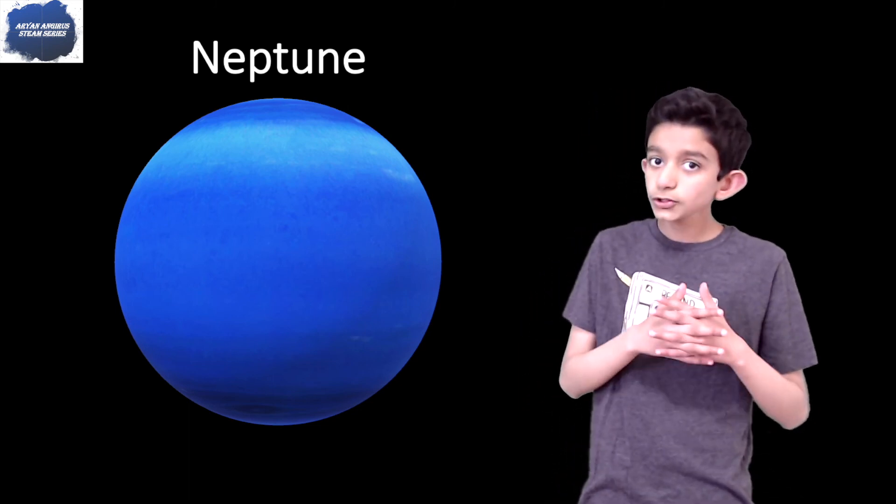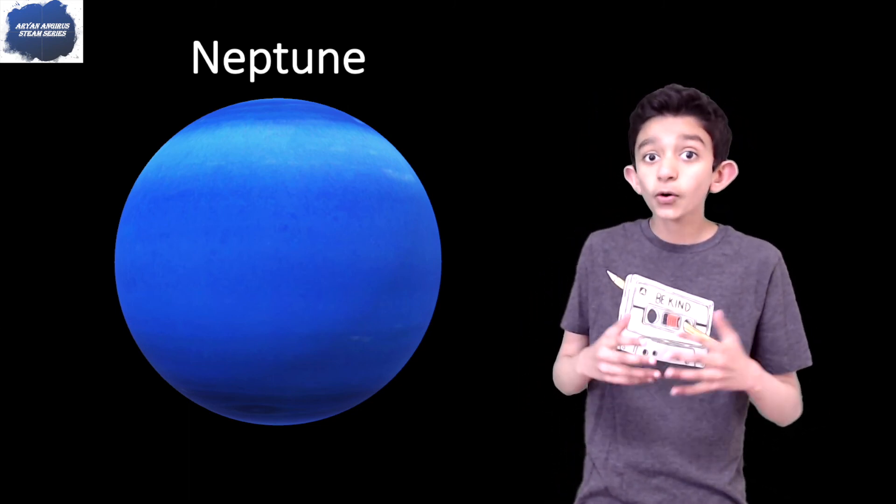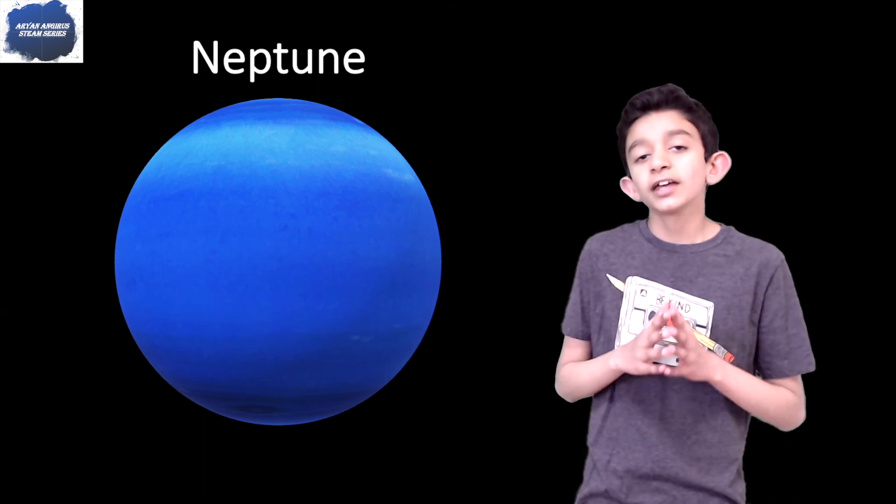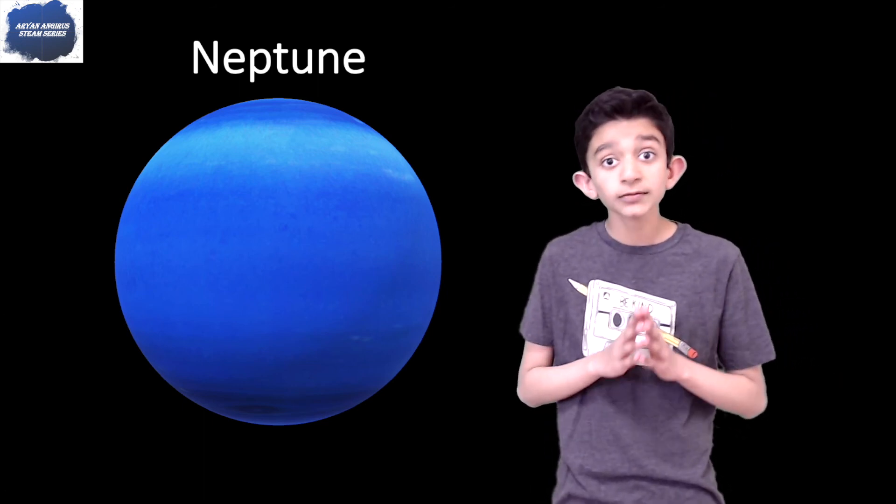Neptune also has moons. It has 14 of them. Since Neptune is sadly the last planet away from the Sun, that means it only has one previous planet to encounter.